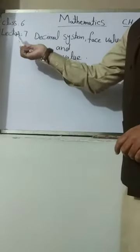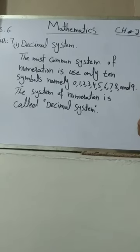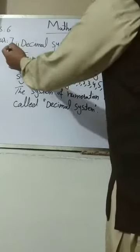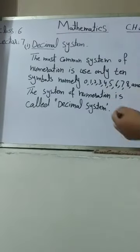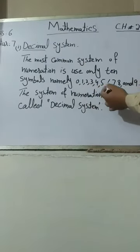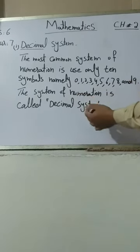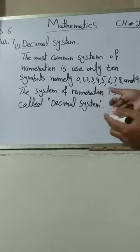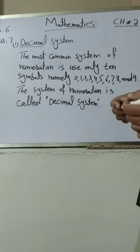Dear students, assalamu alaikum. We are going to start Class 6, Lecture 7, which is based on the decimal system, face value, and place value. The most common system of numeration uses only 10 symbols: 0, 1, 2, 3, 4, 5, 6, 7, 8, and 9. This system of numeration is called the decimal system, which is based on digits 0 to 9.